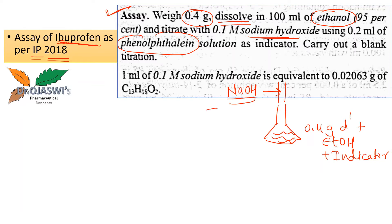This assay procedure is repeated multiple times until a constant burette reading is obtained. The color change due to the indicator marks the endpoint, and that burette reading is noted. The next step in the procedure is to carry out a blank titration.